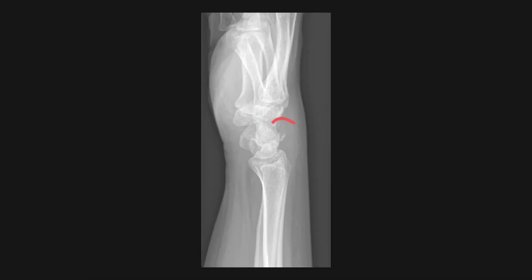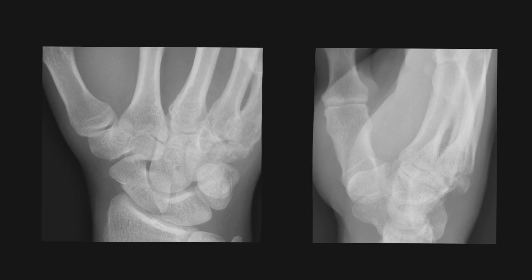Looking at other carpal bone fractures, this bony fragment seen posterior to the carpus is in keeping with a triquetral fracture.